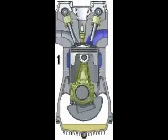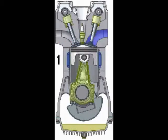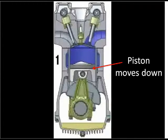The first stroke of the cycle begins with the intake stroke. In this stroke, the intake valve is open and the exhaust valve is closed. The piston moves down the cylinder drawing in a fuel-air mixture.